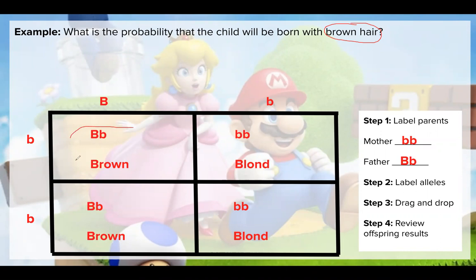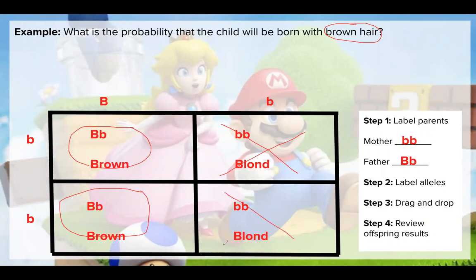The top left box is a yes — that phenotype will have brown hair. The next one, no, that one will be blonde. The one down here, yes, they'll end up with brown hair. And the one on the bottom, no, they'll end up with blonde hair. So we've determined that two out of the four boxes will have brown hair.